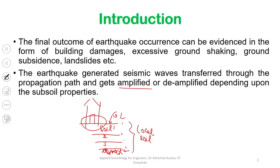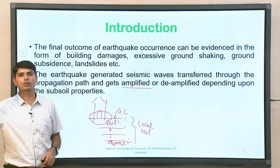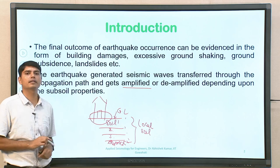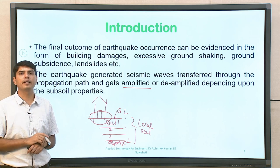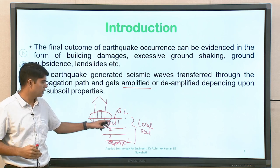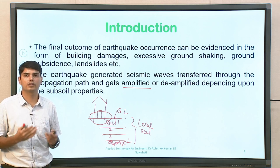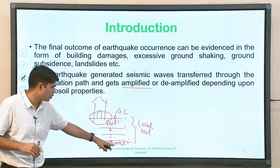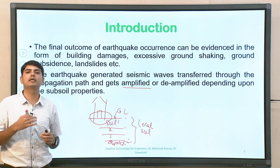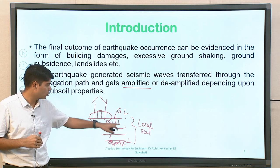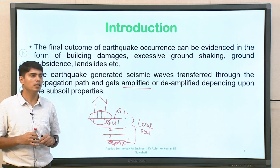At times the motion will be amplified — there will be an increase in amplitude at the surface compared to bedrock — and at times there will be deamplification, depending on the relative characteristics of each layer. If there is a change in stiffness, one can expect amplification or deamplification. This is important because it is the amplified or deamplified ground motion at the surface that defines how much seismic shaking and induced load the building will experience from an earthquake occurring 100, 150, or 200 kilometers away.